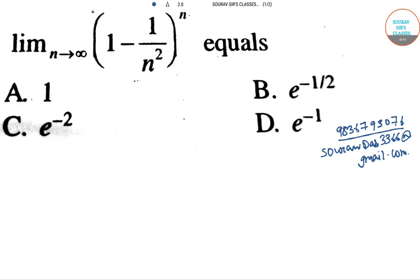The problem displayed is: limit as n tends to infinity of (1 - 1/n²)^n equals what? We need to find the value of this limit.